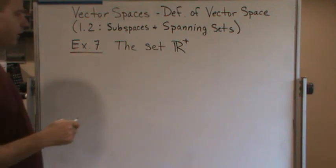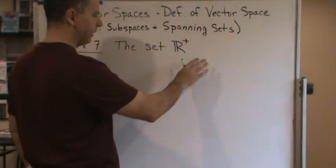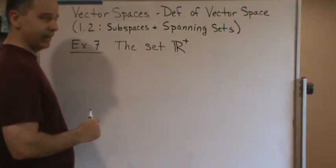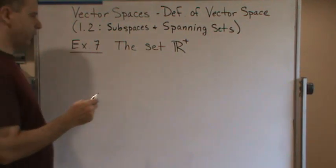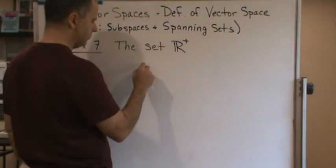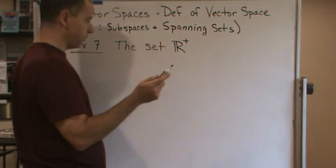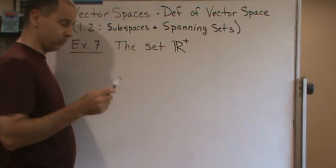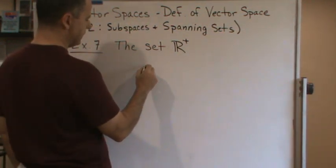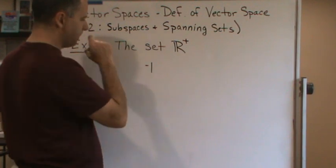Because under the inherited operations of addition and multiplication, if we take any scalar, it's not closed under scalar multiplication, or in this case, regular multiplication, because if I take negative one times...